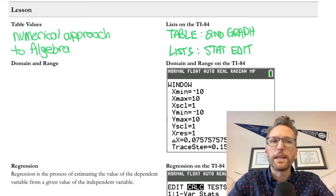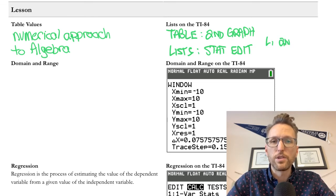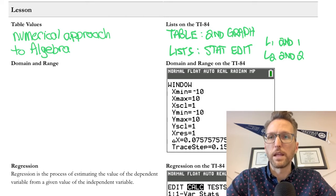Oh, the other thing I should tell you is that the lists in the calculator, list one, can be accessed by pressing second one, and list two, second two. And you'll see me use that later.